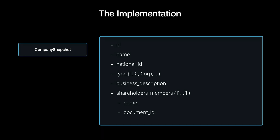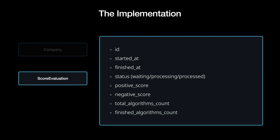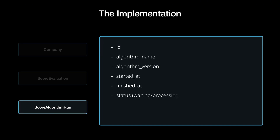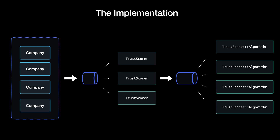A company snapshot has fields like name, national ID, type, business description, and shareholder members — don't forget to respect compliance policies when saving personal data. A score evaluation has fields like started_at, finished_at, and status, and also stores the result for positive and negative scores, plus caching columns to count the algorithms and avoid querying the database. A score algorithm run has fields like name, version, started_at, finished_at, status, execution context data, and the result.